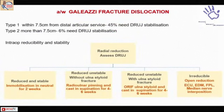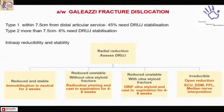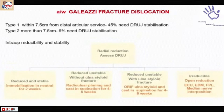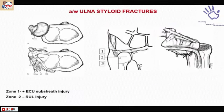In Galeazzi injuries, the distance from the joint has significance: in type 1 injuries within 7.5 cm the incidence of DRUJ instability is higher, while in type 2 injuries farther away it is less. Anatomical reduction of the radius is paramount. After fixation: if reduced and stable, immobilize; if reduced and unstable without fracture, pin or cast; if there is a fracture, fix the ulnar styloid and cast. Sometimes you find irreducible DRUJ dislocations in Galeazzi where you need to address the interposed tissue, with ECU being the primary pathology.